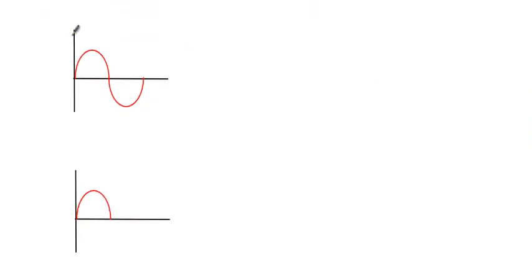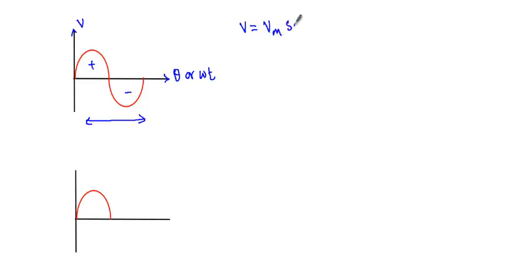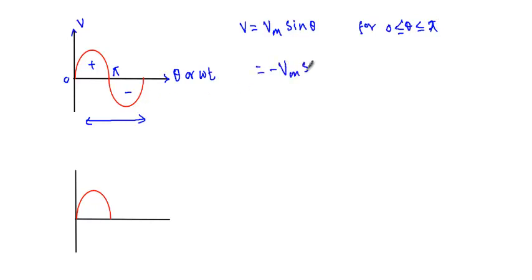For a sine wave with voltage V plotted against theta or omega T, we calculate the area over a full cycle. During the positive half cycle, V equals Vm sin(theta) for the interval 0 to π. During the negative half cycle, V equals minus Vm sin(theta) for the interval π to 2π.